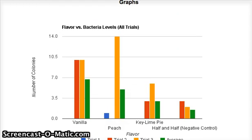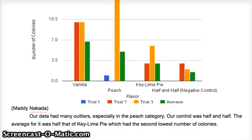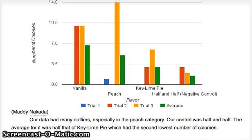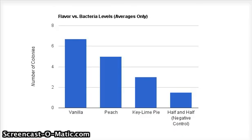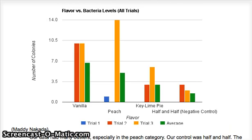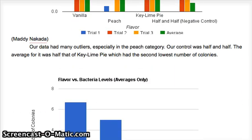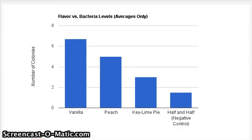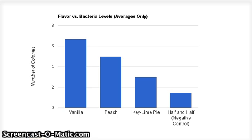These are our final graphs. On our flavor graph, our numbers were all over the place — on peach, we had one trial that was way above the others. This is our flavor graph showing averages only. Surprisingly, it actually turned out to have a trend, but the averages are really unreliable — it just happened to end up that way.